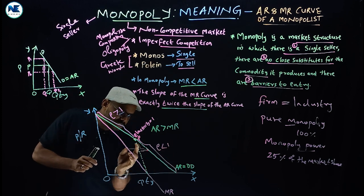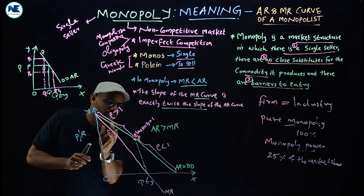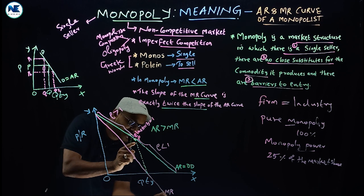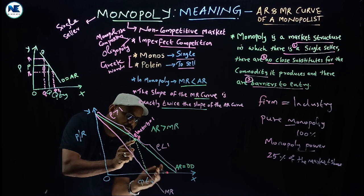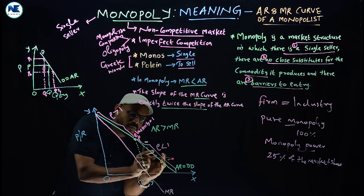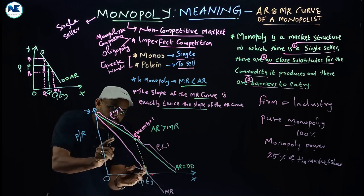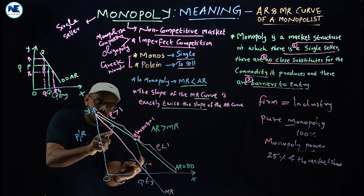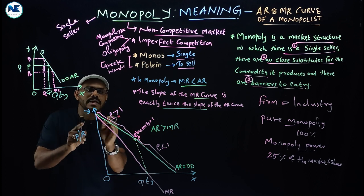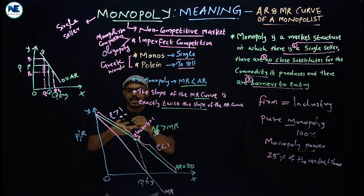At the midpoint, marginal revenue is zero. When marginal revenue is negative, average revenue is still positive and elasticity is less than 1. When marginal revenue is positive, average revenue is also positive and elasticity is greater than 1 on the left side.